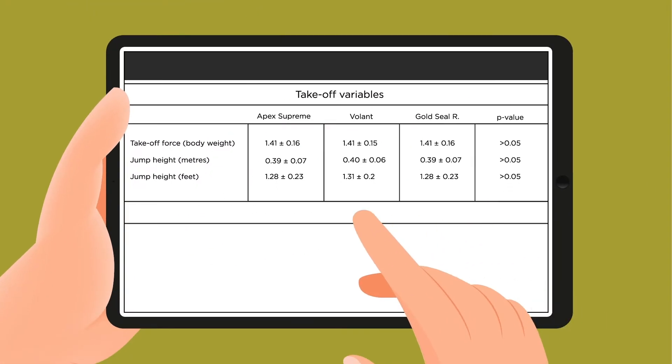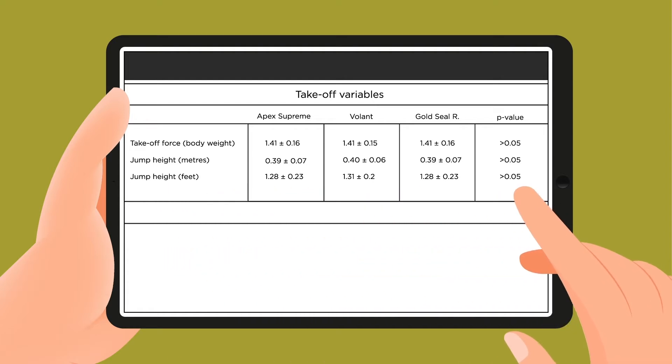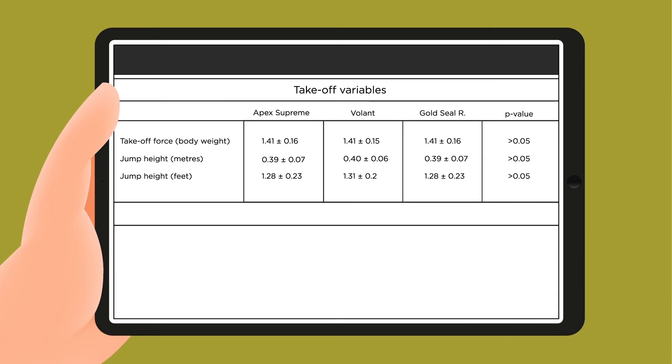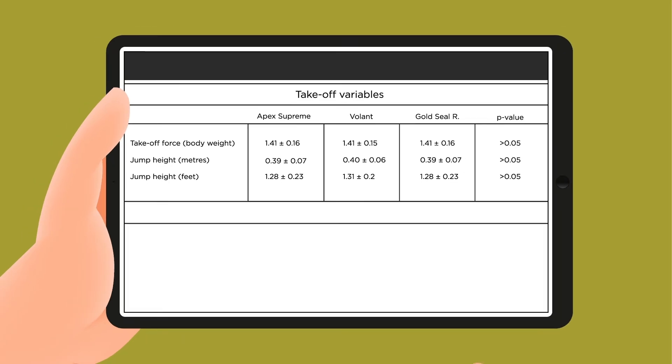Researchers found no significant differences in the jump heights, despite the weight differences of 44% or 288 grams between the lightweight and traditional blades.